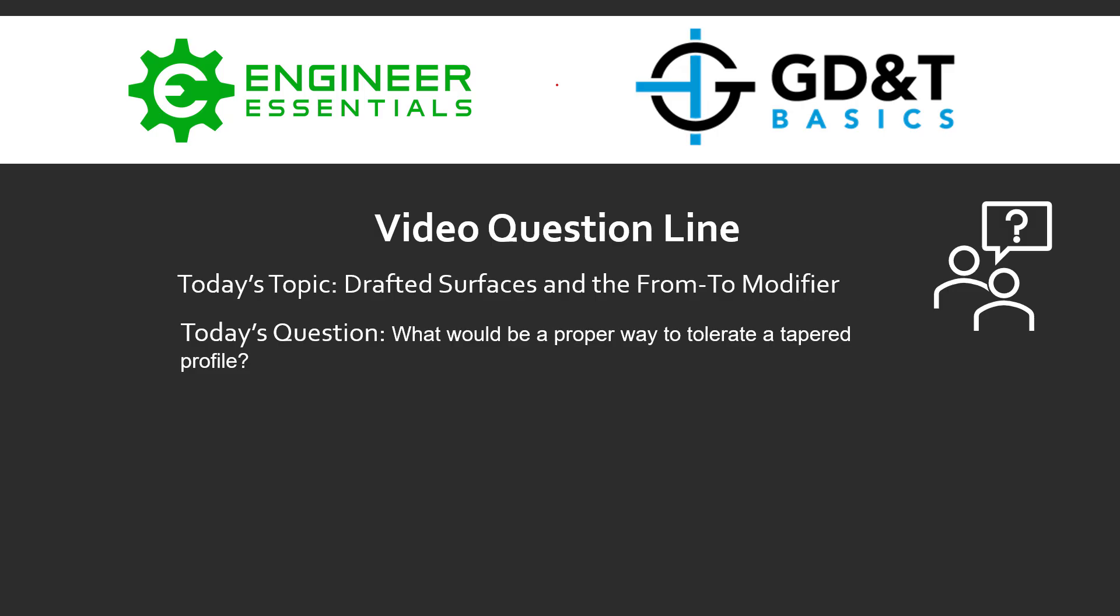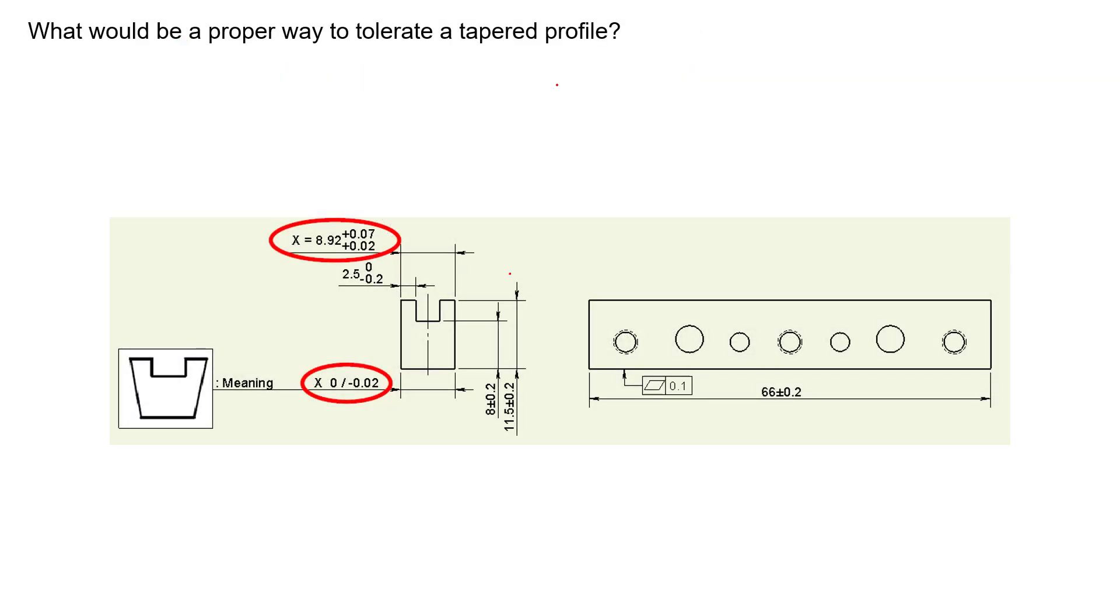Hey everybody, Jason here again with GD&T Basics and the video question line. Today's topic is drafted surfaces and the from-to modifier. The question that was submitted is: what would be a proper way to tolerance a tapered profile? With that question, the person submitted a couple of screenshots.